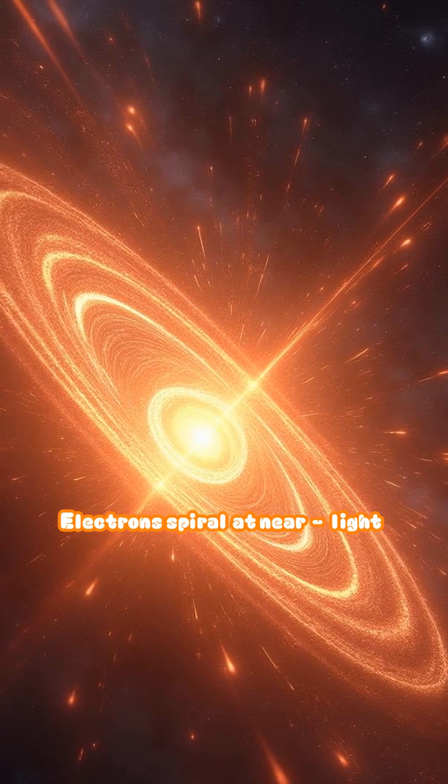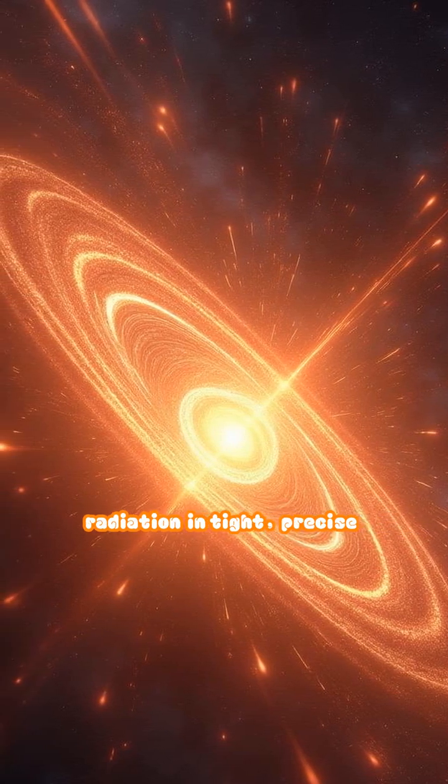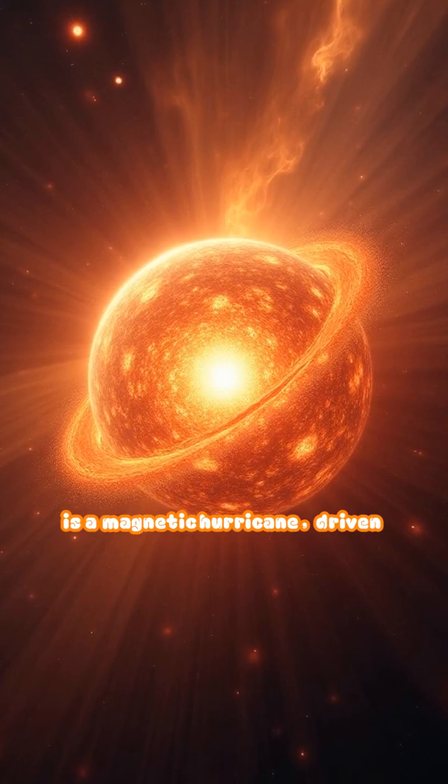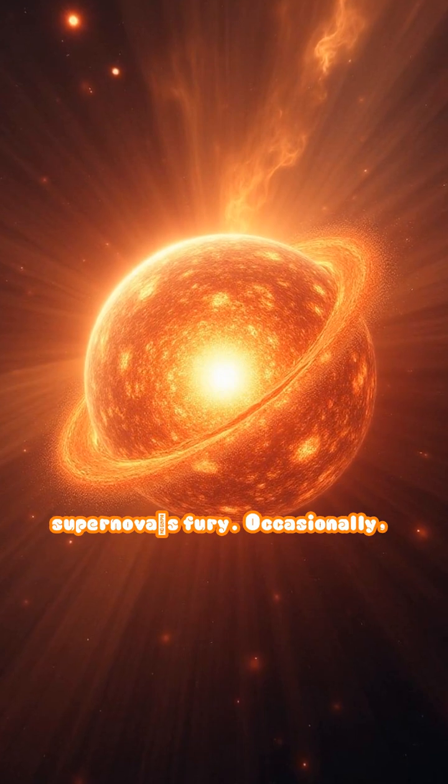Electrons spiral at near-light speeds, unleashing beams of radiation in tight, precise pulses. This is no mere storm—this is a magnetic hurricane, driven by energy left over from a supernova's fury.